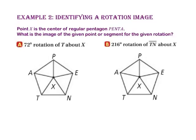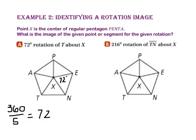In Example 2, we will identify a rotation image. Point X is the center of regular pentagon PENTA. What is the image of the given point or segment for the given rotation? Part A calls for a 72 degree rotation of point T about point X. Since this pentagon has five congruent triangles, we divide 360 by 5 to get each central angle of 72 degrees. Since I want one 72 degree rotation — one turn counterclockwise from point T — that would be to point N.